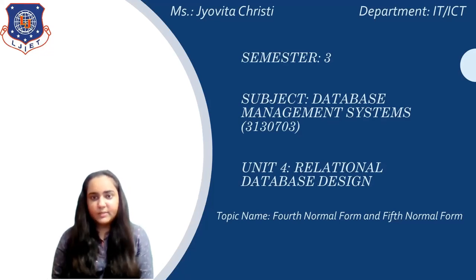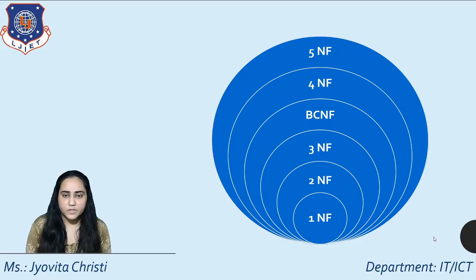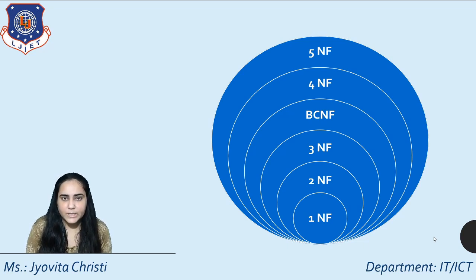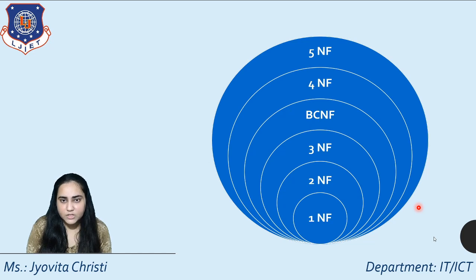Hello and welcome to database management systems. I'm Jovita Christie and in this video I'm going to explain the fourth normal form and the fifth normal form in the normalization process. In my previous videos I've already explained all the steps of normalization starting from 1NF to BCNF, as well as decomposition. Those videos are linked below, and I recommend watching them before this video, where I'll explain the last two steps: 4NF and 5NF.